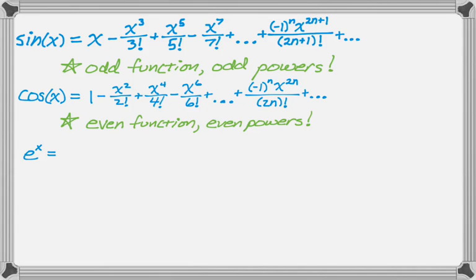The next one is e to the x. So e to the x is kind of arguably easier to remember. So it's just 1 plus x plus x squared over 2 factorial plus x cubed over 3 factorial plus dot dot dot. And in this case, it does not alternate, and it's just going to be x to the n over n factorial plus dot dot dot.